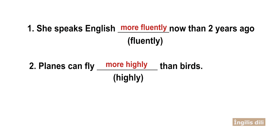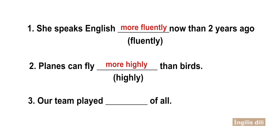The third and last sentence is: 'Our team played ___ of all.' The word is 'badly.' The correct form is 'worst.' Our team played worst of all.